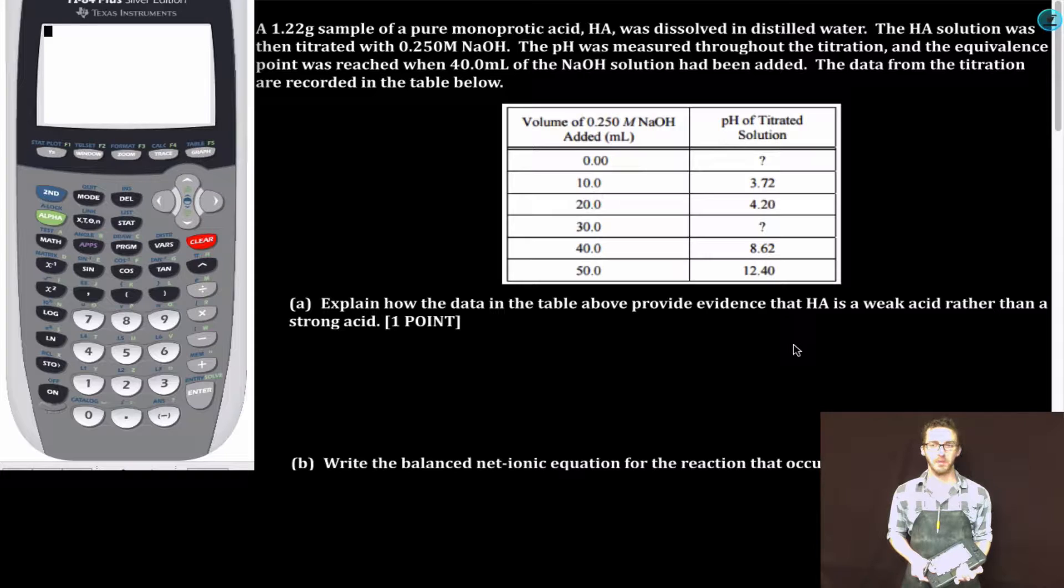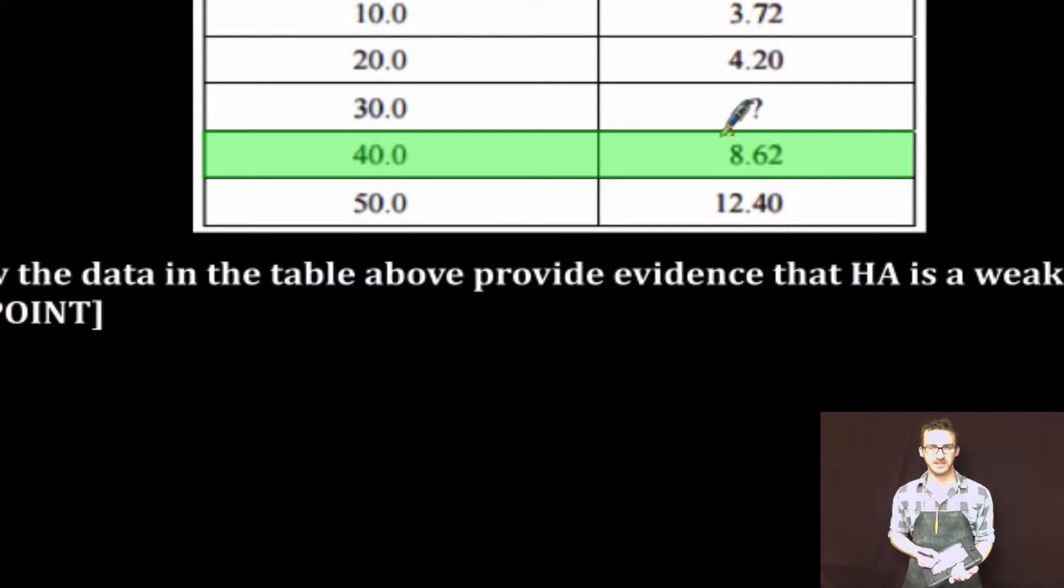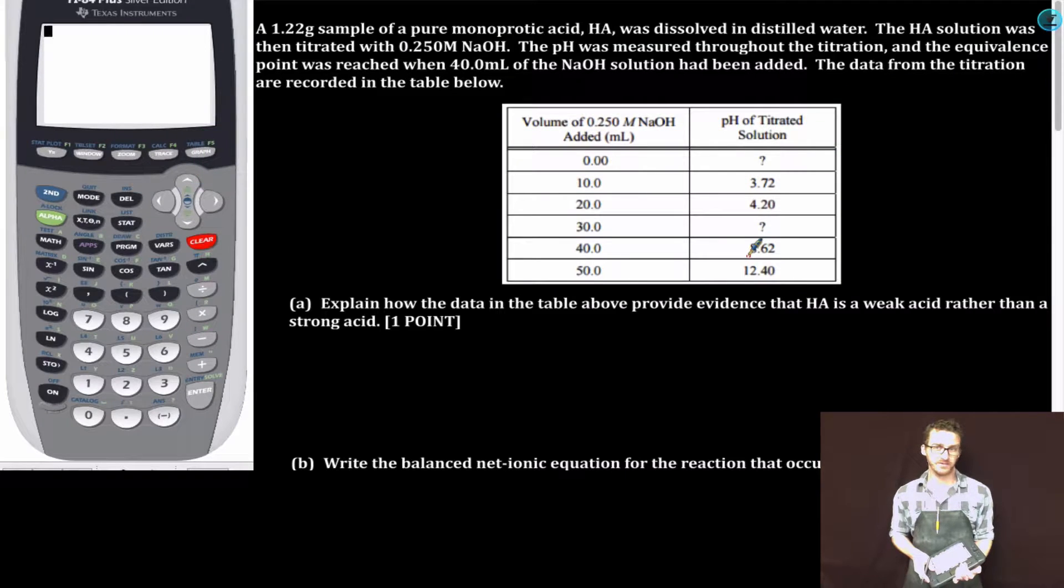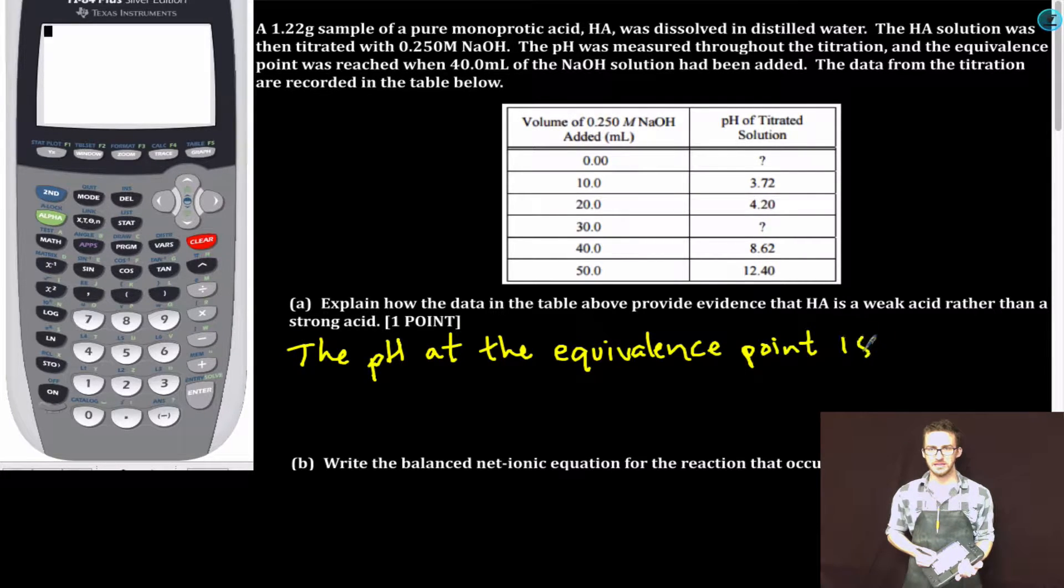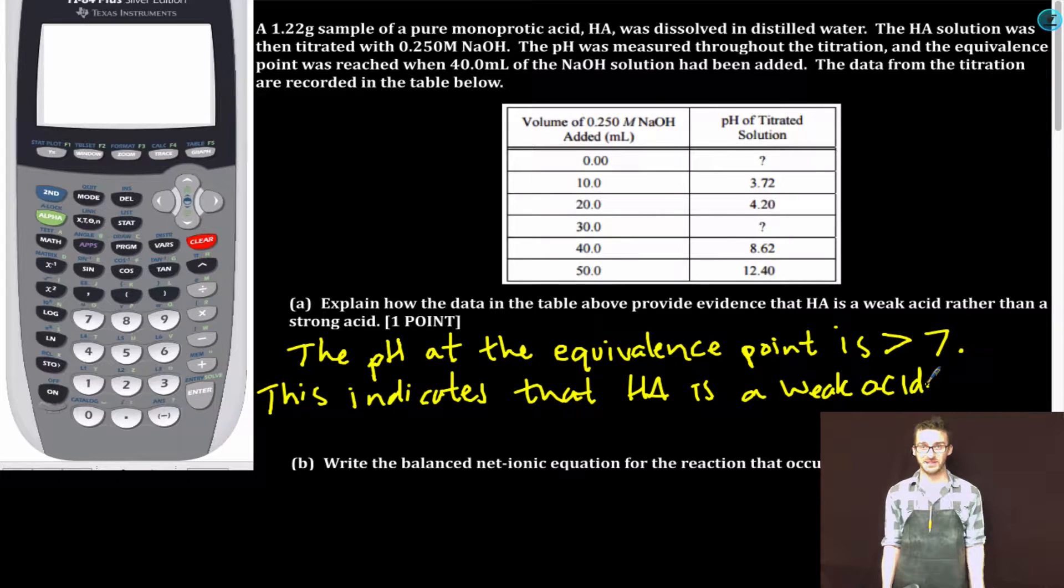Part A: Explain how the data in the table above provide evidence that HA is a weak acid rather than a strong acid. As we take a look at this data table, the easiest way to explain is to go to the equivalence point. At the equivalence point, notice that the pH is 8.62 or slightly basic, and that is indicative of a weak acid. The pH at the equivalence point is greater than 7. This indicates that HA is a weak acid. Remember, if it was a strong acid titrated with this strong base, the pH would be 7.